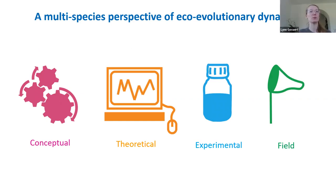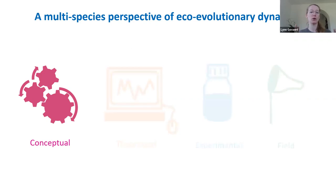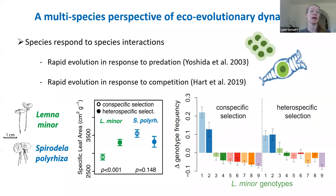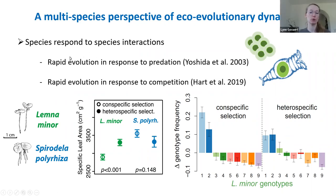I want to tackle this from a conceptual, theoretical, experimental, and field approach, though for this talk I will mainly focus on the conceptual work. Moving towards a multi-species perspective of eco-evolutionary dynamics is highly relevant because in nature all species are embedded within communities. I also showed earlier that species respond and can evolve to species interactions — for example, in the predator-prey system we observed rapid evolution of the prey population to predation, and studies have also shown rapid evolution in response to competition.